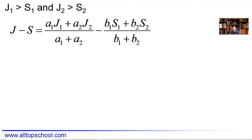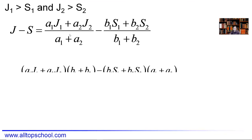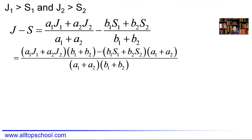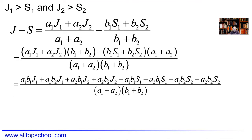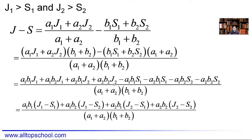There are many unknown values, but we can figure this out with some algebra. We put the two fractions over a common denominator by cross-multiplying: J's fraction gets multiplied by (B1+B2) and S's fraction by (A1+A2). After expanding and grouping matching terms, the numerator becomes: A1·B1·(J1−S1) + A1·B2·(J1−S2) + A2·B1·(J2−S1) + A2·B2·(J2−S2).